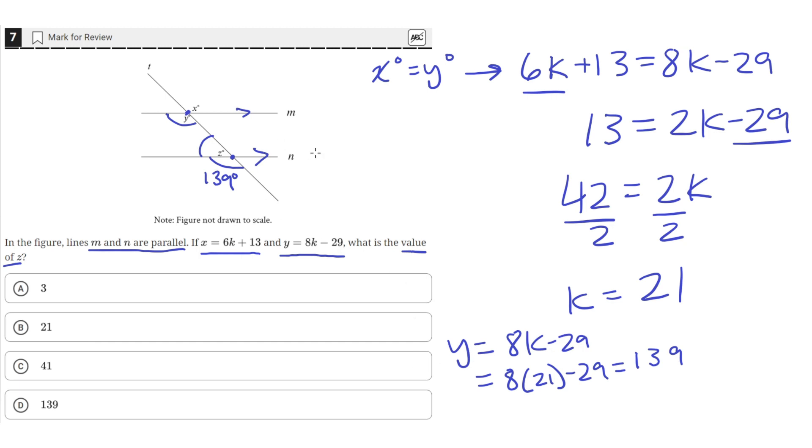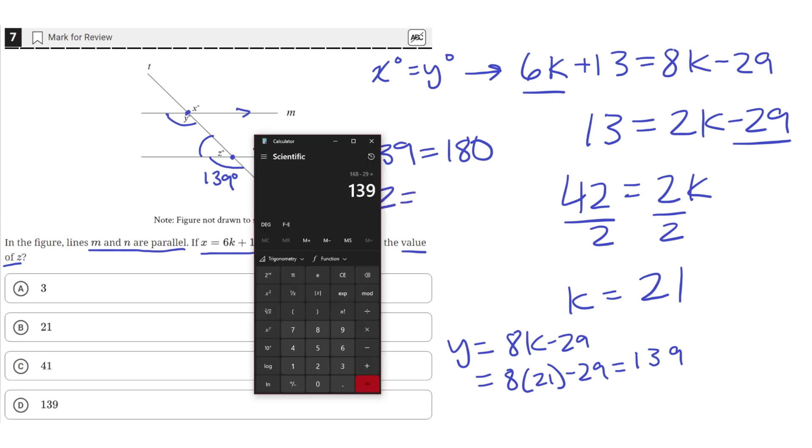So that means the measure of angle Z plus the measure of the other angle that forms the line should add up to 180. So that means Z should be equal to 180 minus 139. So 180 minus 139 is equal to 41 degrees.